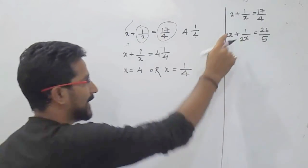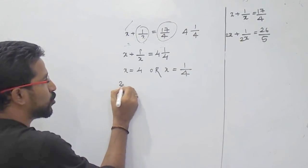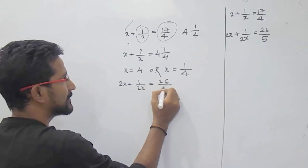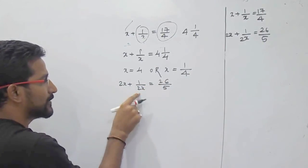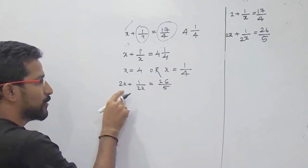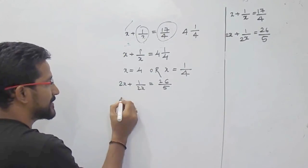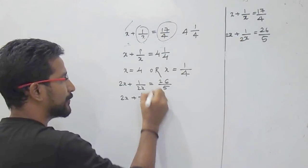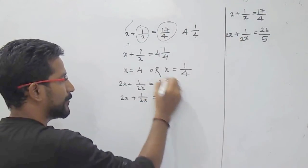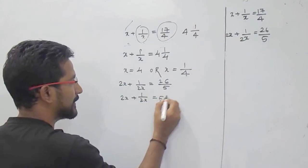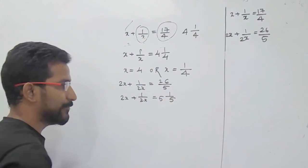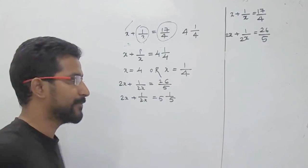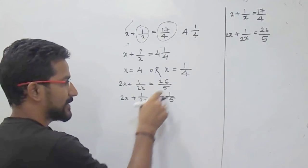Now we will see one more example. For example, 2x plus 1 by 2x equals 26 by 5. Both terms are in reciprocal form — 2x and 1 by 2x are reciprocal of each other. On the right hand side, 26 by 5, written as a mixed fraction, is 5 and 1 by 5. That is 5 into 5 equals 25, plus 1 equals 26 by 5. So they are also in reciprocal form.